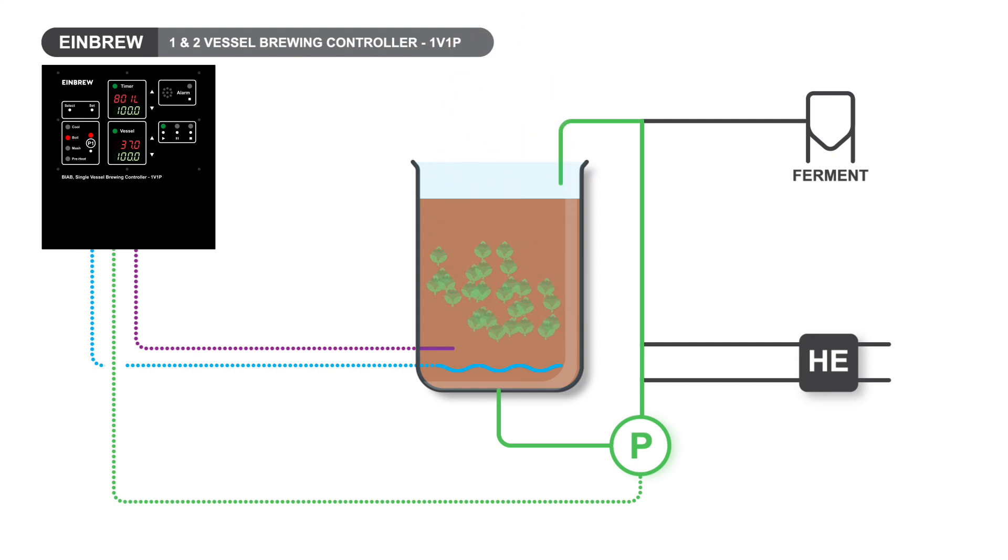After the boil, the 1v1P controls to the preset fermentation temperature. Simply start your active cooling and it will alarm when you've reached your pitching temperature.